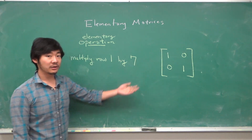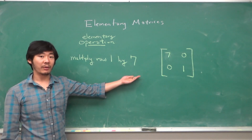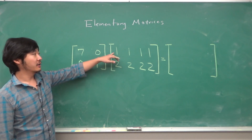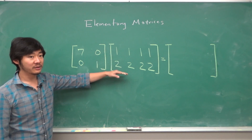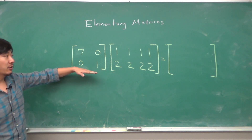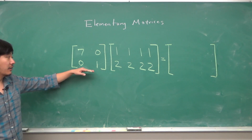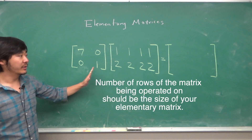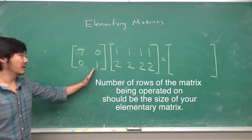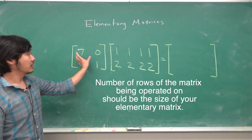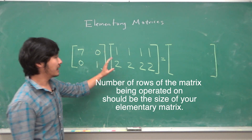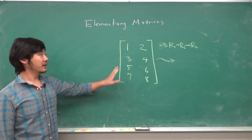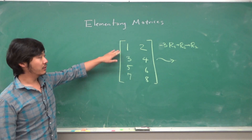What about the scaling operation? For two by two matrices, if we want to do the row operation where we multiply row one by seven, we can just do a matrix multiplication of this elementary matrix by this matrix. We need to make sure that our elementary matrix has the same number of columns. If you do row times column, you'll see that you end up with this matrix.